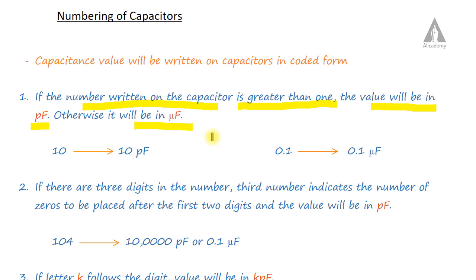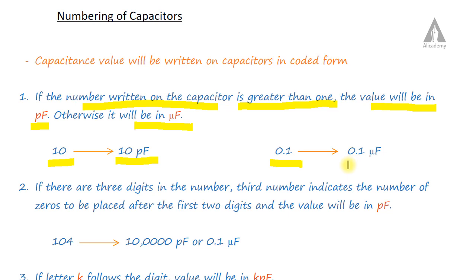Otherwise the value will be in microfarad. So, if the number on the capacitor surface is greater than one, the value will be in picofarad. Suppose 10 is written on the surface, it means 10 picofarad. Suppose 0.1 is written, it means 0.1 microfarad, since the value is less than one, it is in microfarad.